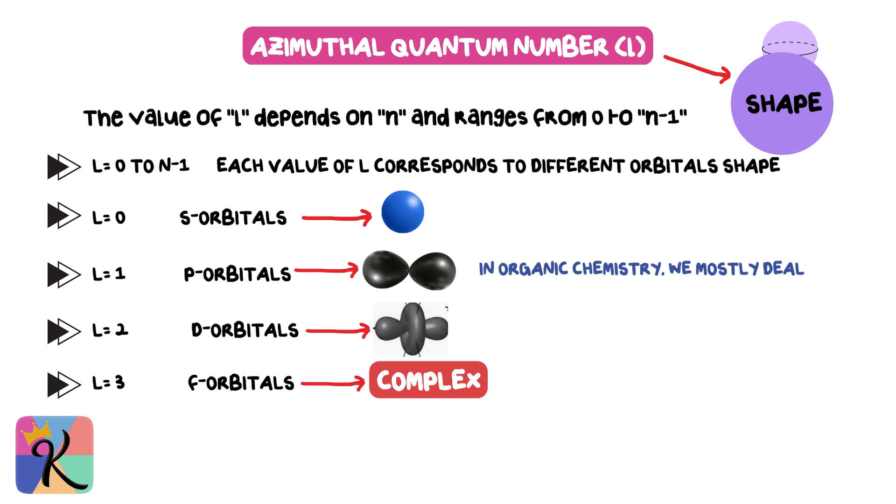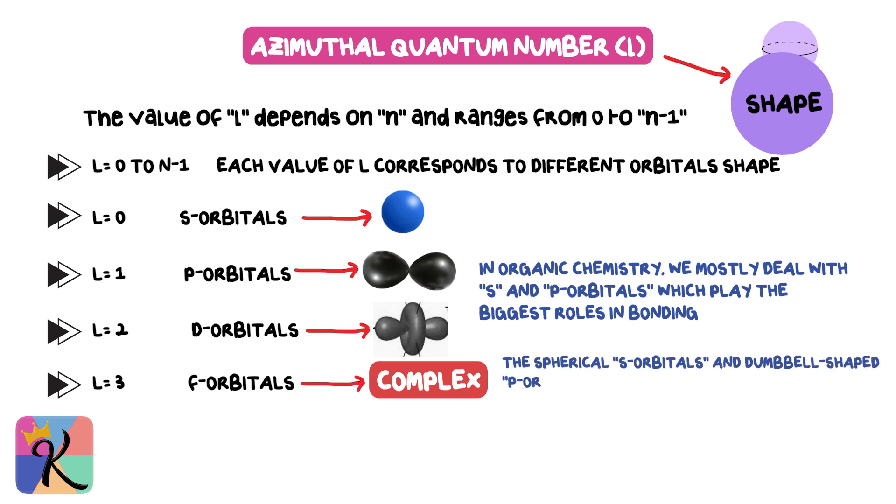In organic chemistry, we mostly deal with s and p orbitals, which play the biggest roles in bonding. The spherical s orbitals and dumbbell shaped p orbitals are critical in forming bonds between atoms.